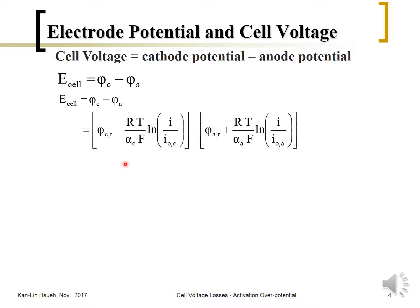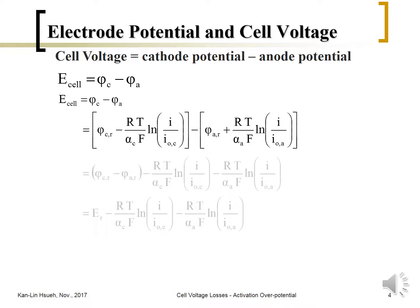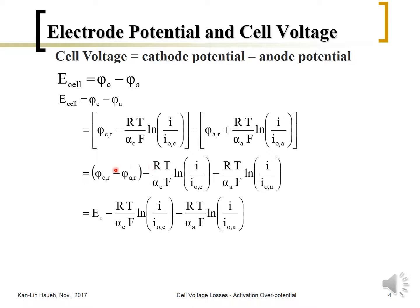Since it is at a reversible potential, meaning at current equal to zero, we can lump terms together. At current density equal to zero — the open-circuit voltage — we have the equilibrium cell voltage. This is the cathode voltage loss and the anode voltage loss. For the PEM (proton exchange membrane) fuel cell, the hydrogen oxidation reaction at the anode is very fast.